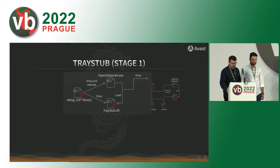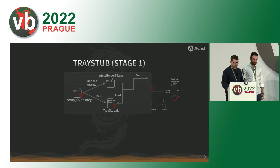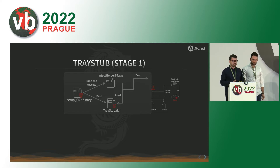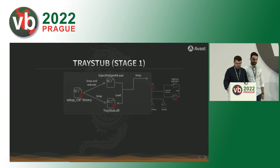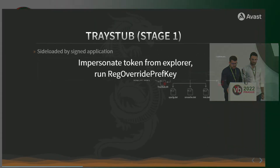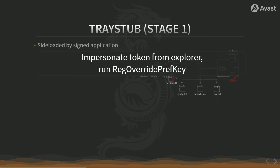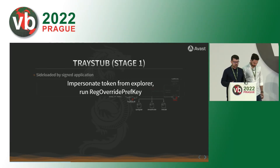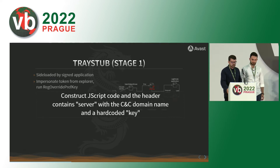Now we are at stage one, which consists of two parts. The main executable was a setup executable whose binary name was mimicking the name of the WPS Office setup. This stage was also abusing sideloading. To access the current user hive of the user logged in on the system, they impersonated the token of Explorer and used the RegOverridePredefKey Windows API. After that, they constructed JavaScript code with some hardcoded values.